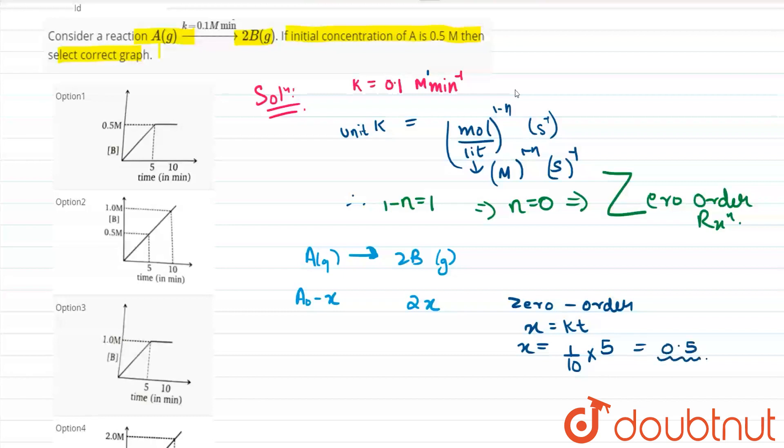Now the value of x is 0.5 but the concentration of B will be equal to 2x that equals to 1, that is friends 1 molar.